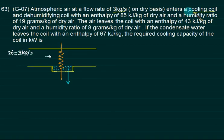At entry, it enters a cooling coil and dehumidifying. This one is cooling coil and dehumidifying. Enthalpy at entry is 85 kilojoules per kg of dry air, humidity is 19 grams, which is 0.019 kg per kg of dry air.